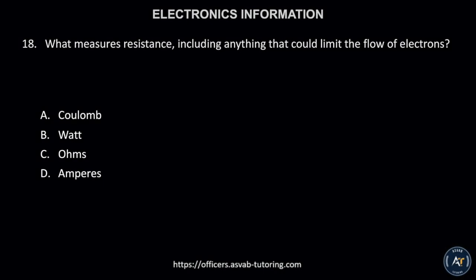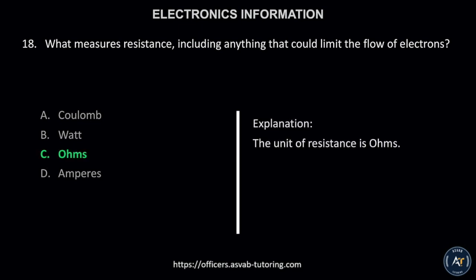Number 18. What measures resistance, including anything that could limit the flow of electrons: A. Coulomb, B. Watt, C. Ohms, or D. Amperes? The correct answer is letter C, ohms. The unit of resistance is ohms.